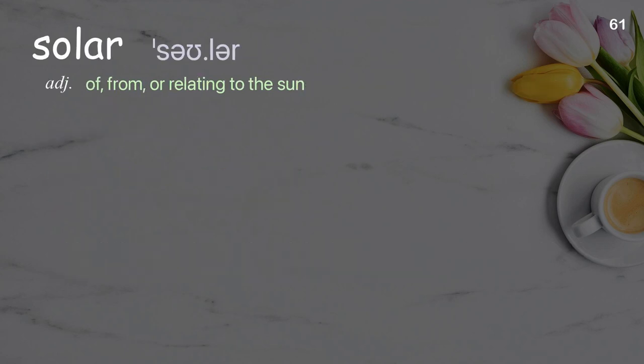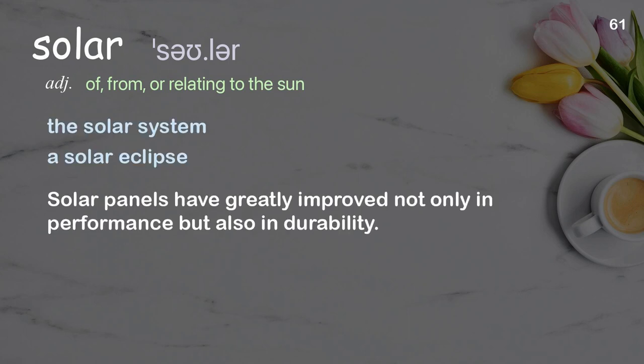Solar: of, from, or relating to the sun. Examples: the solar system, a solar eclipse. Solar panels have greatly improved not only in performance but also in durability.